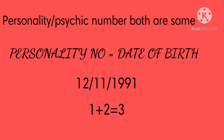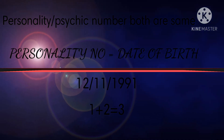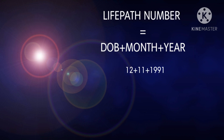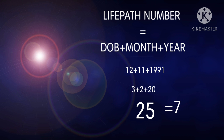Now we'll quickly understand what the life path number is all about and how to calculate it. The life path number, or destiny number, is a very important number because it represents the vibratory influences existing at the time of a person's birth, which help to predict their overall personality and their current life status.